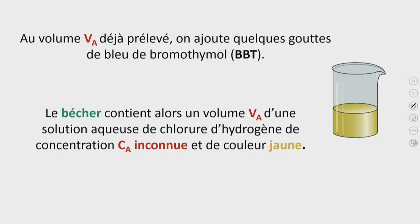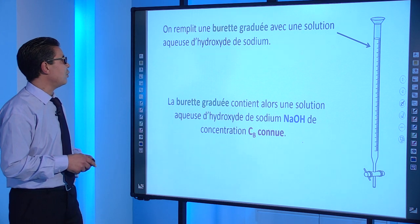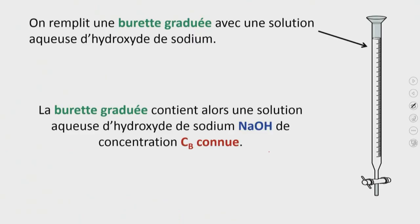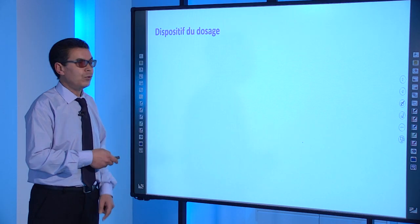Au volume Va déjà prélevé, on ajoute quelques gouttes de bleu de bromothymol (BBT). Le bleu de bromothymol est un indicateur coloré qui donne une couleur jaune en milieu acide, une coloration bleue en milieu basique et une couleur verte en milieu neutre. Au départ, on a une solution d'acide, donc avec le BBT, on a la coloration jaune. On remplit ensuite une burette graduée avec une solution aqueuse d'hydroxyde de sodium de concentration Cb connue.